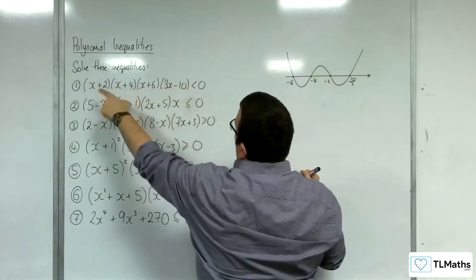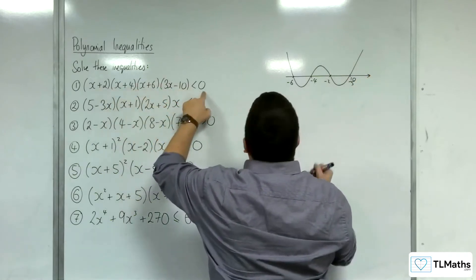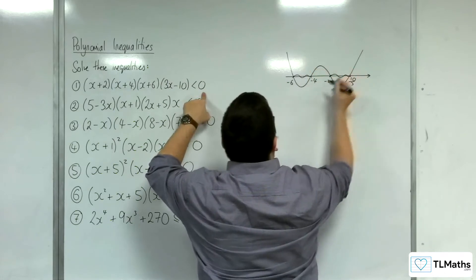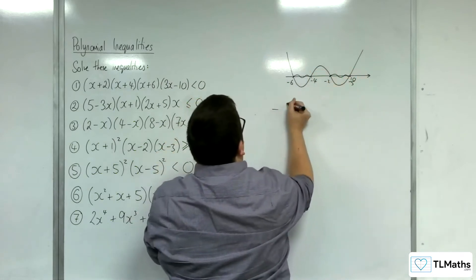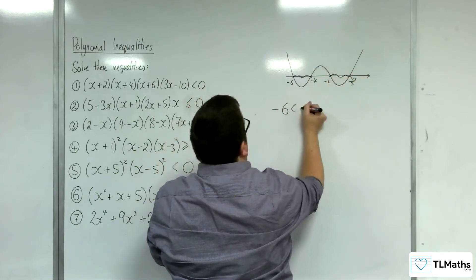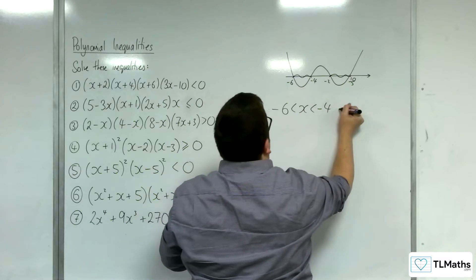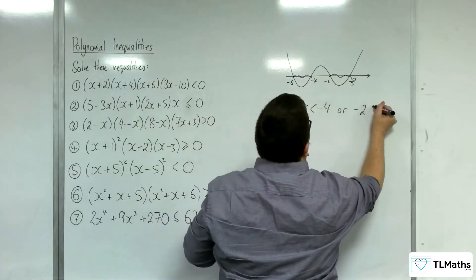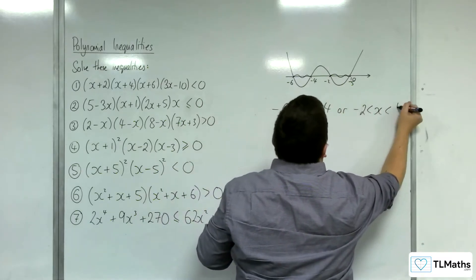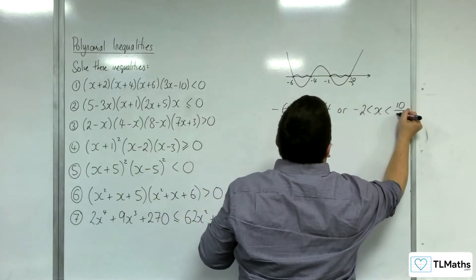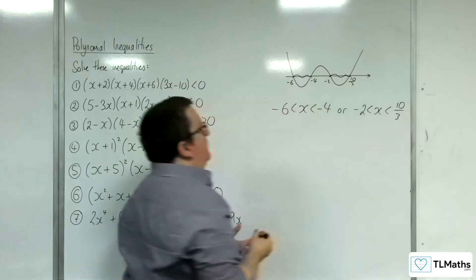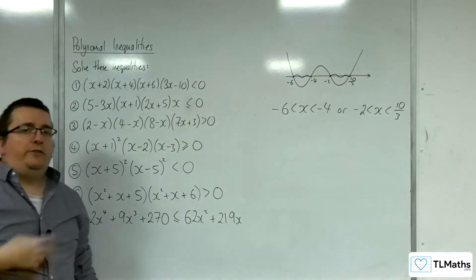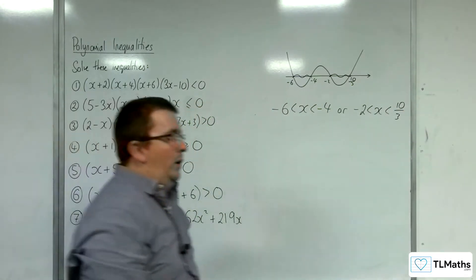So where is the graph below the x-axis? We've got two regions: x is greater than minus 6 but less than minus 4, or x is greater than minus 2 but less than 10 thirds. So two distinct regions, two distinct inequalities.